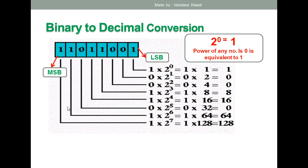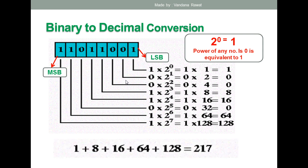Just like that, you multiply all the binary digits with 2 to the power, starting the exponent from 0 and incrementing by 1 each time. Then, as the second step says, you add all the multiplication results together and you get 217.